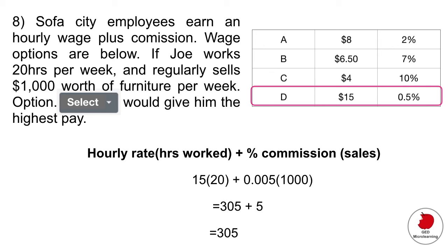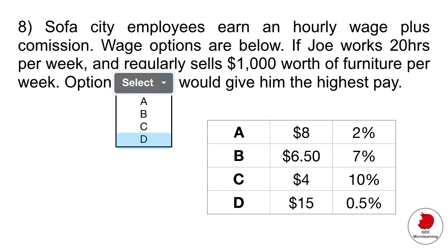I think I made a mistake. 15 times 20, yeah, so it's 15 times 20 should be 300, plus $5 is $305. So the best option for him would be option D.